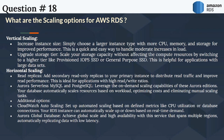Your RDS instance can automatically scale up or down based on real-time demand. Aurora Global Database achieves global scale and high availability, spanning multiple regions and automatically replicating data with low latency. Choosing the right scaling approach requires careful analysis of your application's workload, performance requirements, and budget constraints.